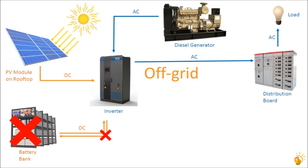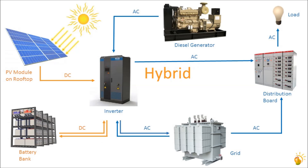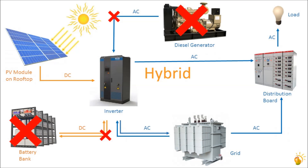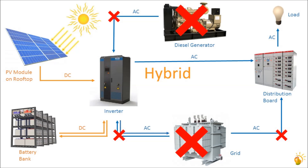And finally, what would happen if a hybrid solar plant, which can integrate with grid, diesel and battery power, were to not receive power from any of these three sources? In this situation, the hybrid solar plant will not generate solar power. If however any of these three sources of power are present — be it grid power, battery power, or diesel power — the solar plant can still generate electricity and supply the load.